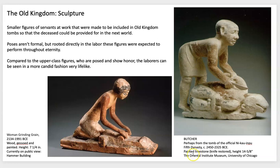I want to take note of where these different ancient art objects are found — the physical provenance. We have the butcher: where it was found, what tomb, when it's from, what it's made of, and finally where it lives today. The Oriental Institute Museum at the University of Chicago is obviously not where it was originally found. One of the discussions will be to think about where the artwork was created thousands of years ago versus where it lives today.